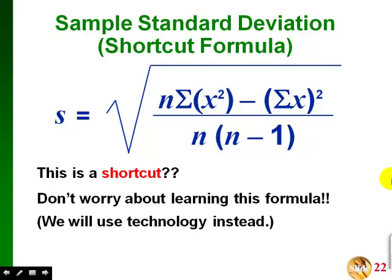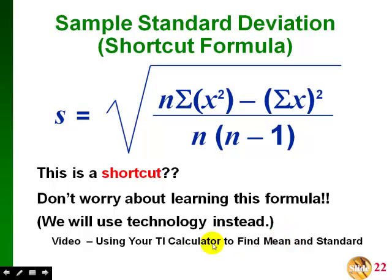So don't worry about learning this formula. We will be using technology such as StatCrunch or a calculator instead of trying to calculate the standard deviation by hand. If you have a TI calculator and you'd like to know how to use it to find the mean and the standard deviation, there's a nice video that shows you how to do this, which is out on the class website on ANGEL. I would highly recommend that you watch this video, as it's so much easier to find the standard deviation using your TI calculator.